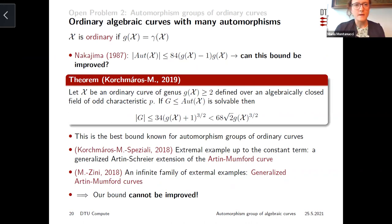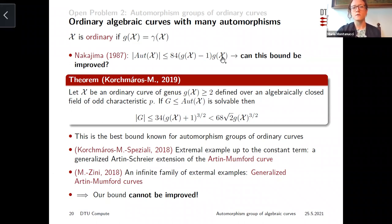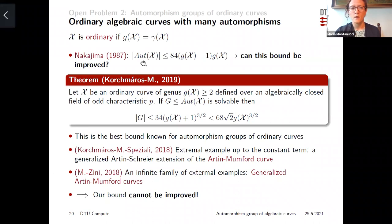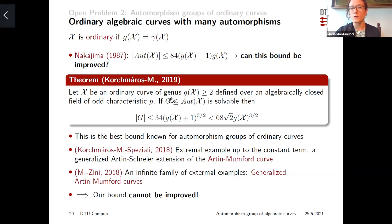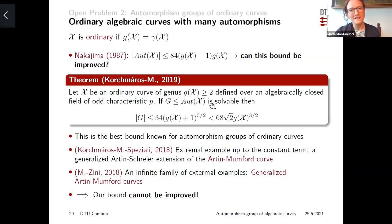I would like to use the last minutes of my talk to discuss open problems 2 and 3. In open problem 2, we are dealing with automorphism groups of ordinary curves — the case in which the genus and the p-rank are equal. Nakajima showed a quadratic bound (at most 84(g-1)^2) without extremal examples, so the question is: can this bound be improved in general? What we managed to prove together with Gabor Koczmarosz is that if you have an ordinary curve of genus at least two over a field of odd characteristic, and a solvable automorphism group, then its order is at most roughly g^{3/2}.